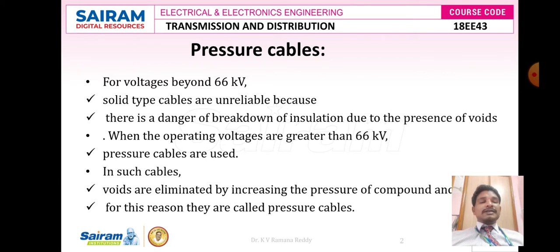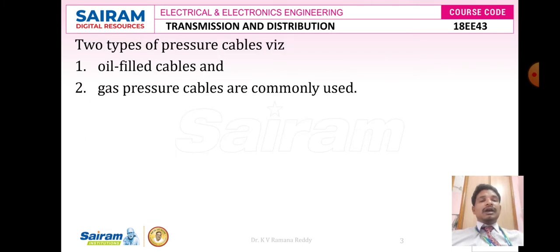Once voids take place, or treeing and tracking has taken place, automatically there exists leakage of currents. Once leakage currents take place, electron pockets appear and there exists a short circuit problem, decreasing the dielectric strength and increasing the breakdown strength. In order to overcome this kind of difficulty, especially to overcome the void, treeing and tracking on the insulation of a given underground cable, we are going to use pressure cables.